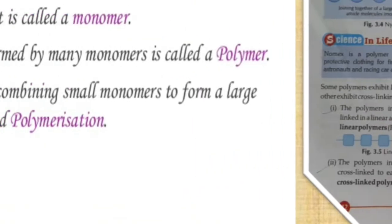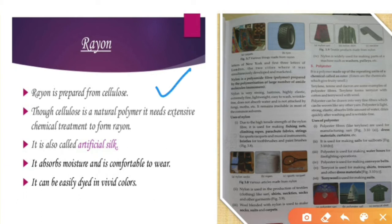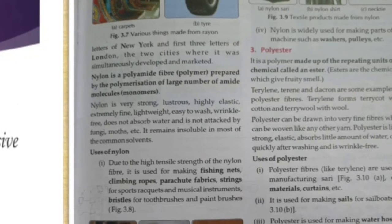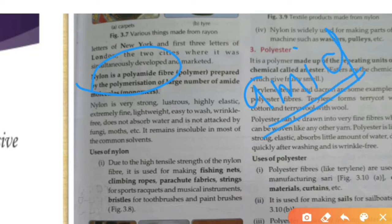Nylon is a polyamide. If anyone asks you what is the monomer of nylon, the answer is amide. Because it is made of many amide units, it is called polyamide, or nylon. Please remember this — it is a one-mark question.